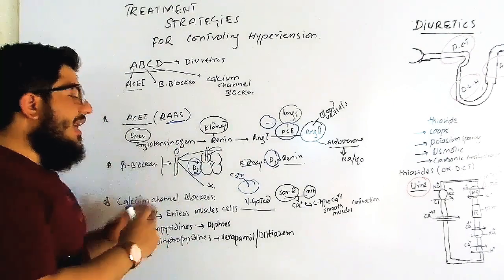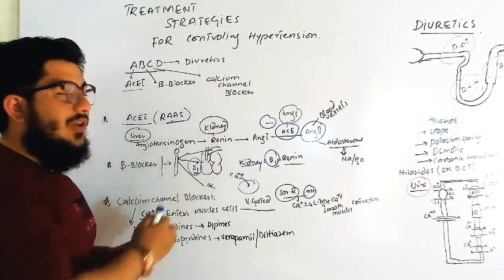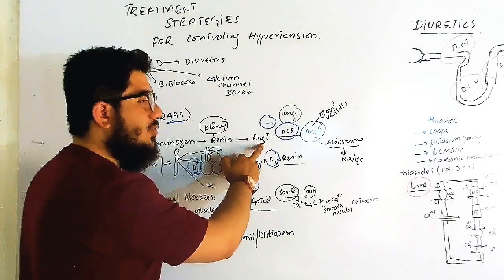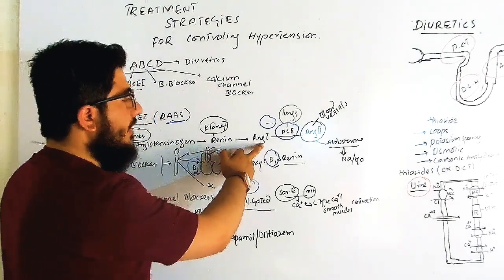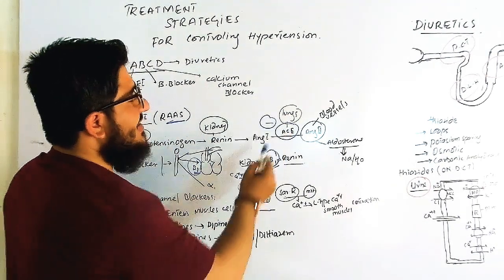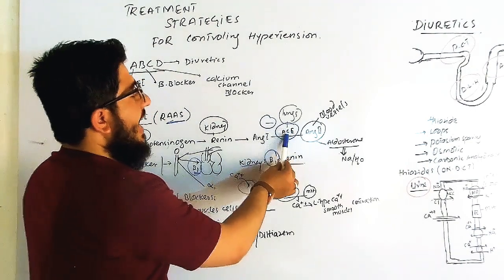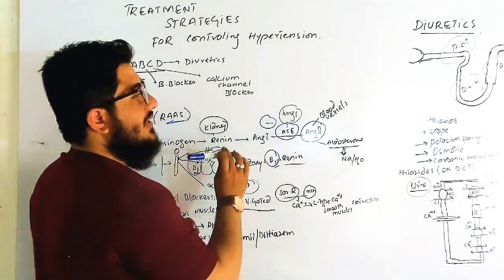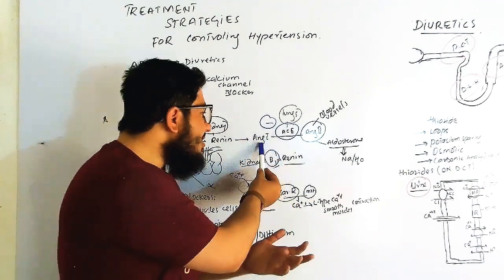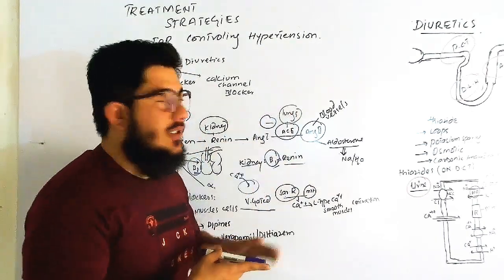The liver releases angiotensinogen. The kidney releases renin, which converts angiotensinogen to angiotensin-1. This angiotensin-1 then moves further, and the lungs release an enzyme called angiotensin-converting enzyme, or ACE. ACE converts angiotensin-1 to angiotensin-2.